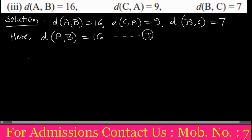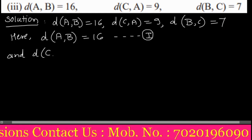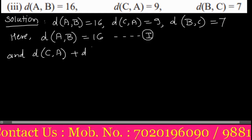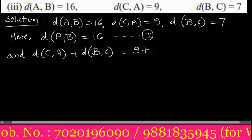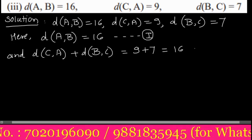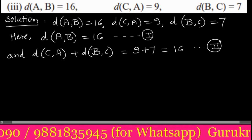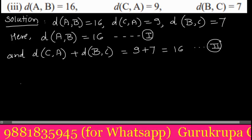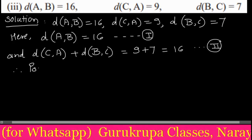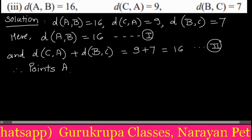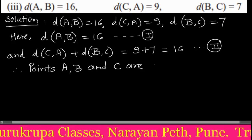Statement 1: the greatest distance AB is 16. Statement 2: the sum of the other two distances, CA and BC, is 9 plus 7 which equals 16. The sum of the two distances equals the third, so therefore these are collinear points.